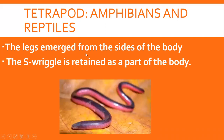Amphibians میں limbs موجود ہیں لیکن وہ body کے بالکل نیچے نہیں ہوتیں، بلکہ body کی right اور left side پر attach ہوتی ہیں۔ جیسے frog کی چار ٹانگیں اس کی body کے بالکل نیچے نہیں، بلکہ sides پر attached ہوتی ہیں۔ اسی طرح lizard، crocodile اور salamander میں بھی ہے۔ Snakes اور caecilians کی category میں تو limbs ہی نہیں ہیں۔